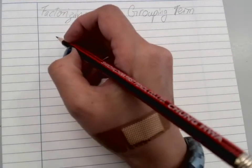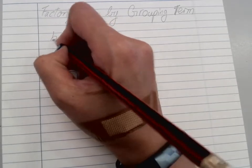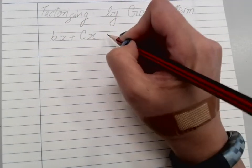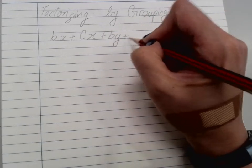Factorizing by grouping terms. We might have to group terms together when we do not have one common factor for all of them. So we have